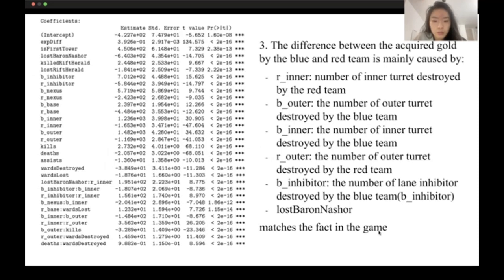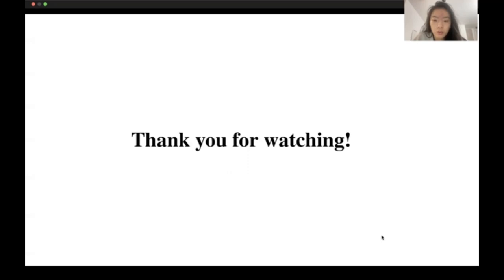We extract the variables with largest absolute value and are confident to say that the top six variables influencing obtaining gold are listed as following, which also matches the fact in the game. So that's all for our presentation. Thanks for watching.